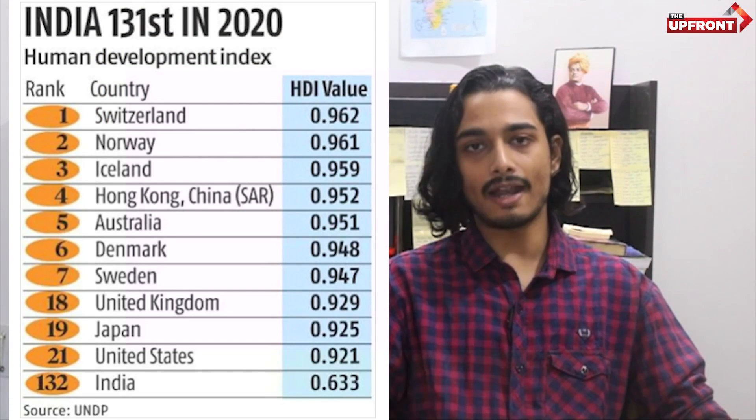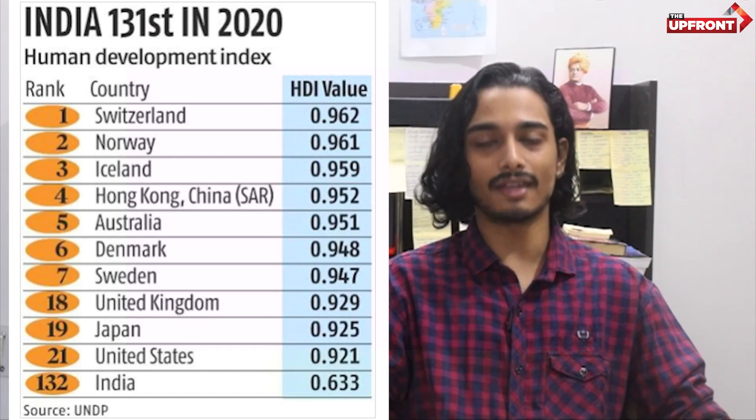Looking at the latest report, Switzerland comes out at the top at rank one, and India's rank is 132nd. India had the 131st rank in 2021 and has slipped to 132nd, with most indicators having dwindled — which is not surprising. As mentioned at the beginning, the HDI of the entire world has declined, and more than 90% of countries have seen a decline in their human development index score, due to many factors including COVID-19 and significant geopolitical tensions going on in today's world.